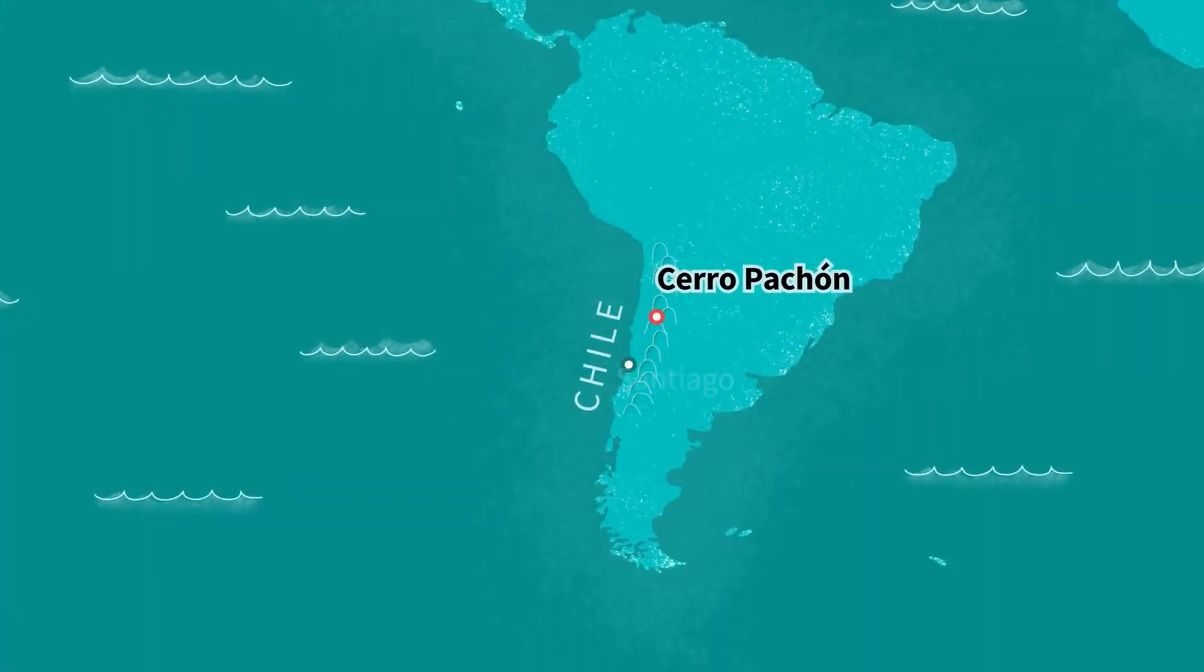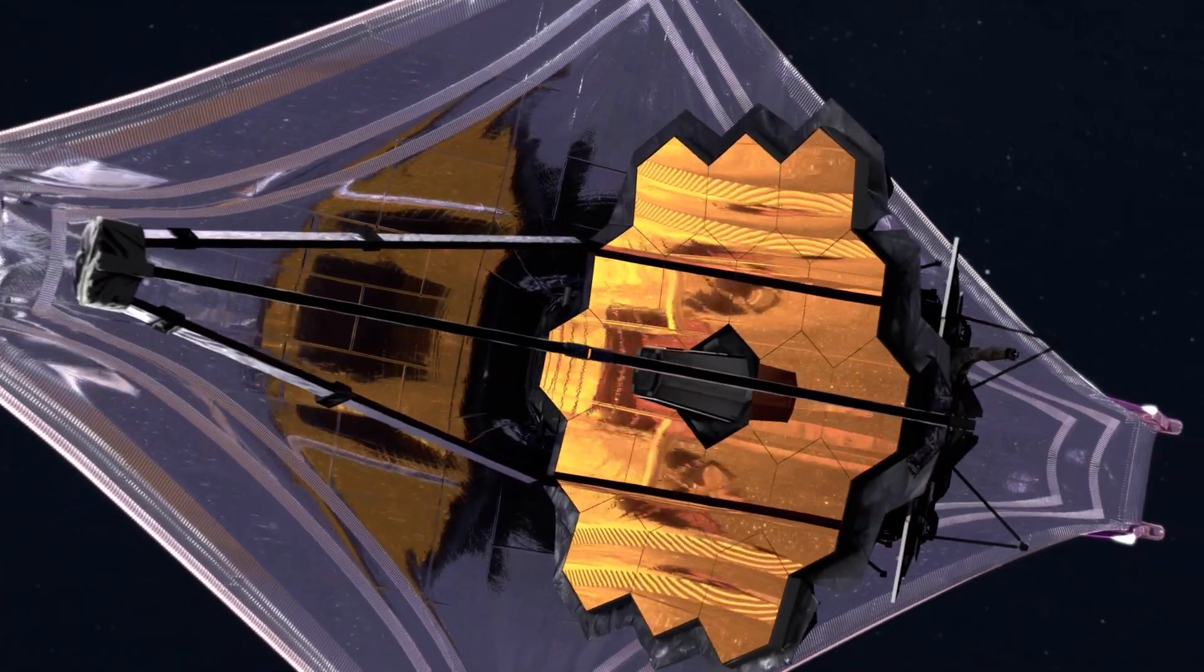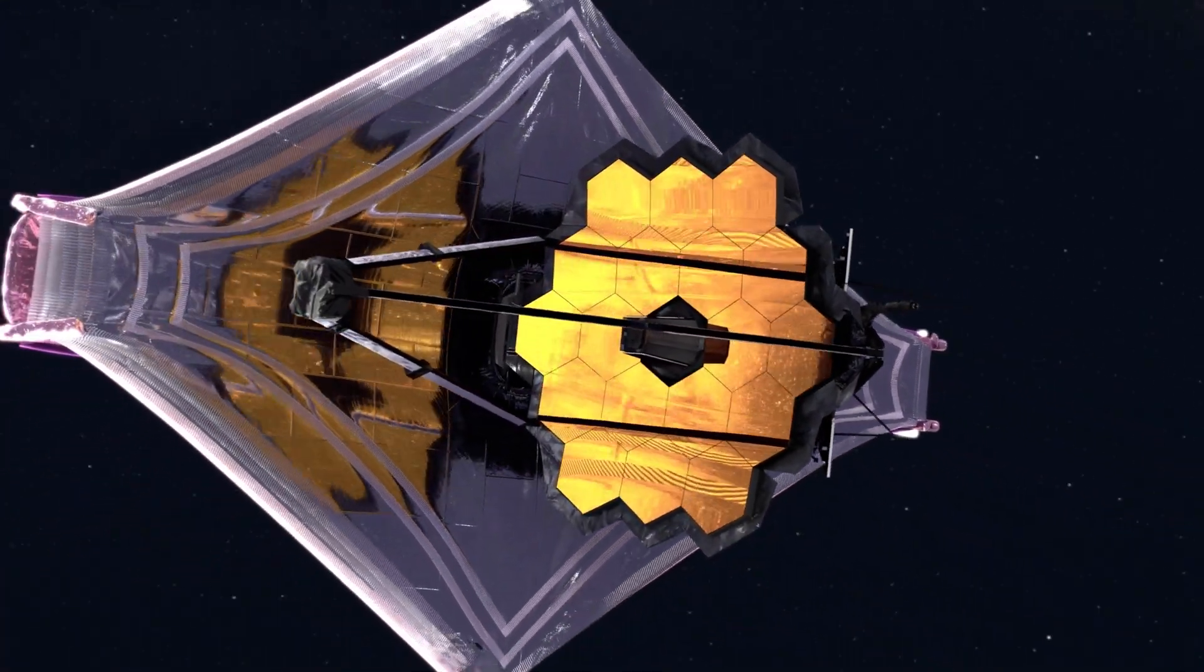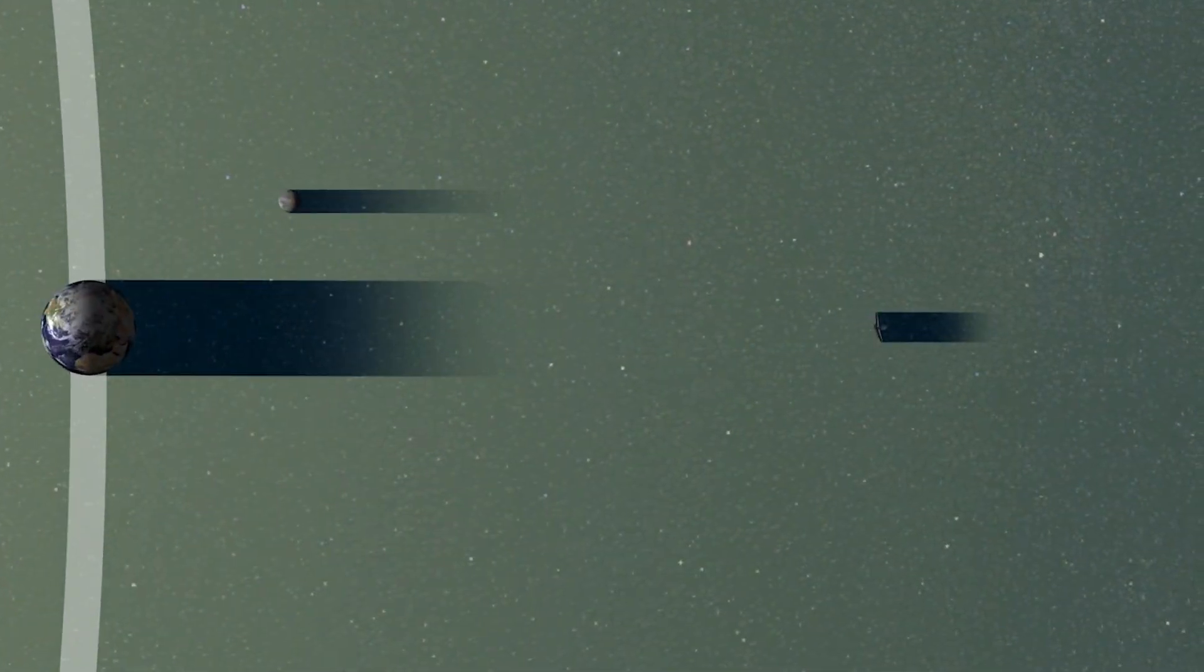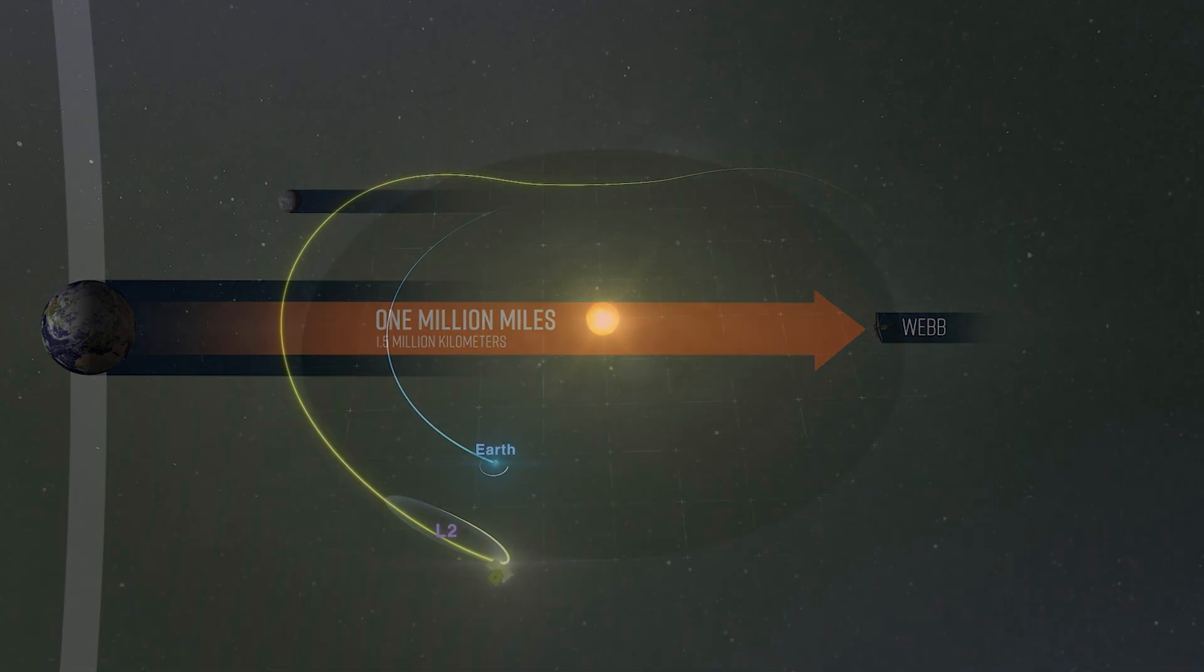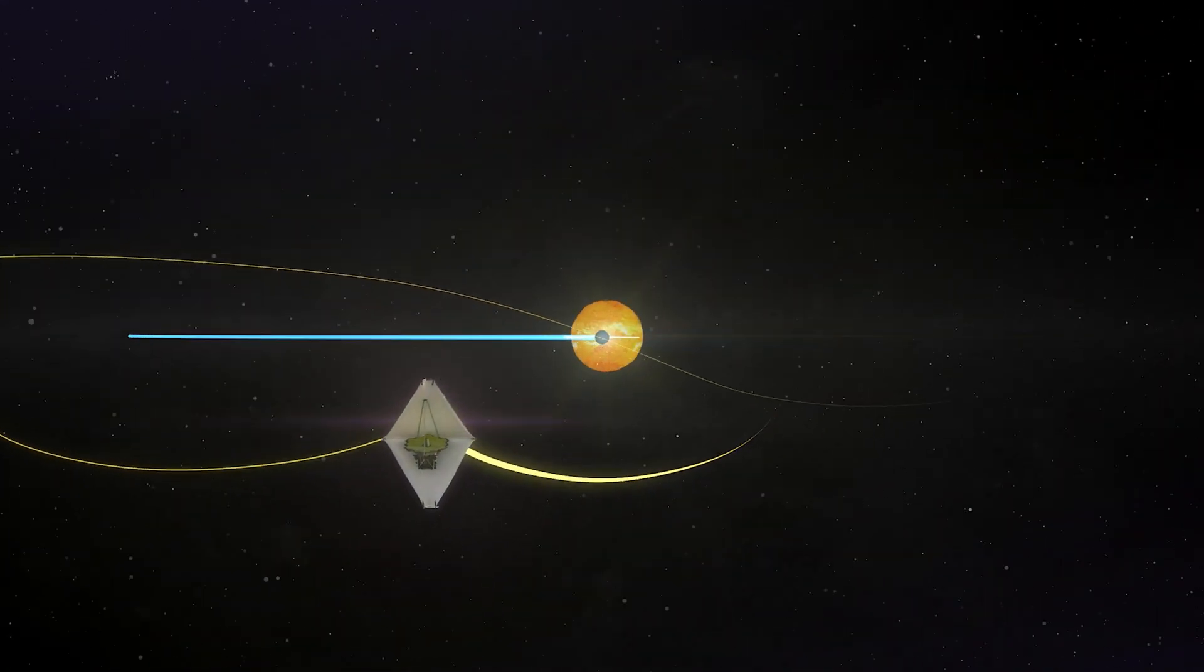To overcome this problem, observatories are built atop mountains like Cerro Pachón for Rubin at 2,700 meters to reduce the amount of air above and select regions with extremely low water vapor. This is where we need space telescopes like James Webb or Hubble. James Webb is around 1.5 million kilometers away from Earth, orbiting a gravitational sweet spot known as the Sun-Earth L2 point.